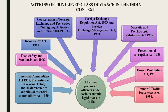The Income Tax Act 1961: among all economic offenses, tax evasion is the most illegitimate activity, practiced by suppressing facts and manipulating records by corporate houses, professionals, and other eligible taxpayers. This act provides for the levy, administration, collection, and recovery of income tax. The next is the Conservation of Foreign Exchange and Prevention of Smuggling Activities Act 1974, which provides for preventive detention in certain cases for the purpose of conservation and augmentation of foreign exchange and prevention of smuggling activities. The preamble notes that detention of persons is necessary for the effective prevention of such activities.